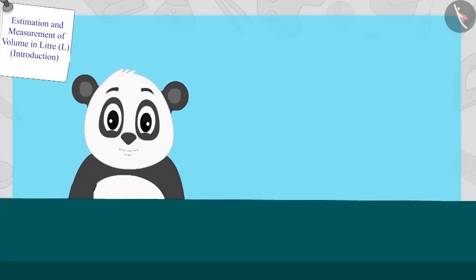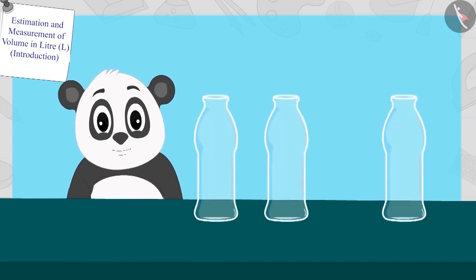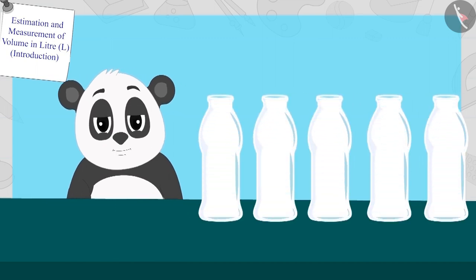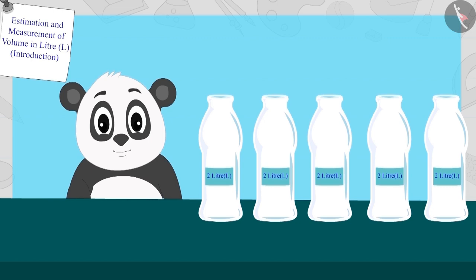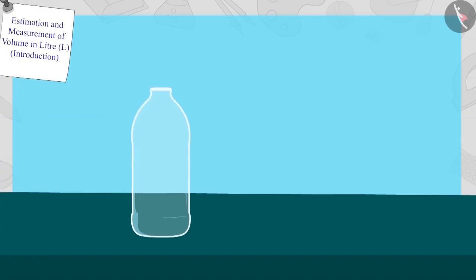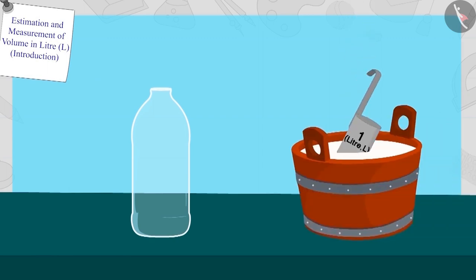Golu immediately filled all similar bottles and put a two-liter sticker on them. Now Golu took one bottle of the other size and started filling it with his one-liter milk measuring scale.